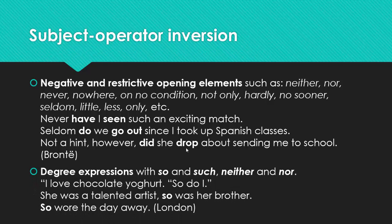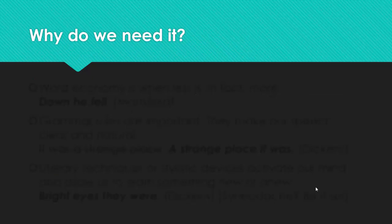Also, subject operator inversion can be made, can be formed when we have degrees of expression with such words as so and such, neither and nor. For example, short dialogue: I love chocolate yogurt. So do I. She was a talented artist. So was her brother. Jack London: So were the day away. The day is the subject of the sentence. Were is the verb. So we put it in the first place because it's a degree expression. So we have checked a few examples and we have seen about the inversion.